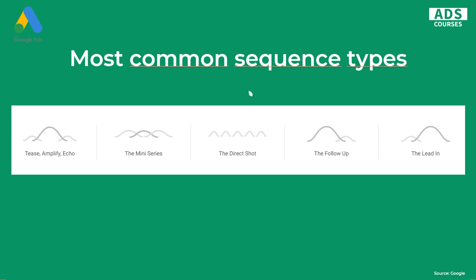The five sequence types are: tease-amplify-echo, the mini series, the direct shot, the follow-up, and the lead-in. The first — tease-amplify-echo — is about showing something that doesn't sell directly, then if they view it, trying to sell the product, then echoing. The mini series uses the same three videos. The direct shot is when you have a longer video that's too long to run as a YouTube ad — you split it into parts and show them as a sequence.